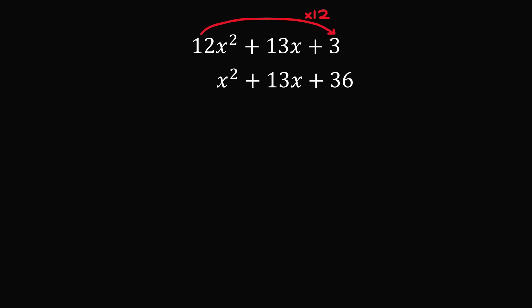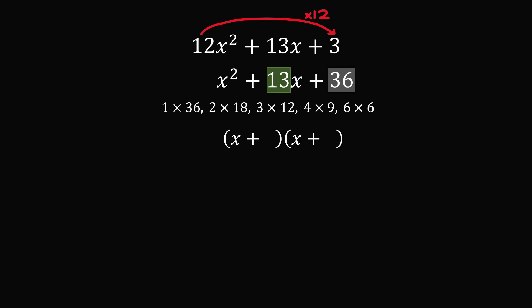The coefficient on x squared is equal to 1, so we know this trinomial will factor as x plus some number times x plus another number. We are looking for two whole numbers that have a product equal to 36 and a sum equal to 13. Looking at the factors of 36, the possibility that works is 4 times 9. 4 times 9 is 36 and 4 plus 9 is 13. So we can factor the trinomial as x plus 4 times x plus 9. Now, how do we get back to the original trinomial? We divide these numbers by 12: 4 divided by 12 equals 1 over 3, and 9 divided by 12 equals 3 over 4.